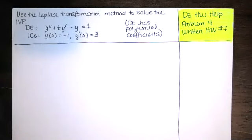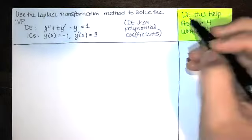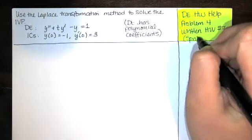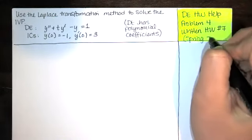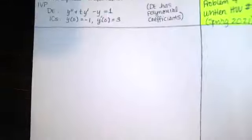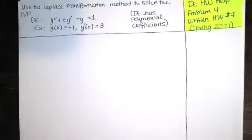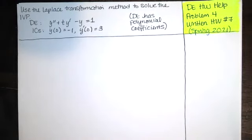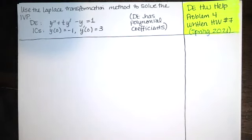In this video we solve problem number four from written homework number seven during the spring 2021 semester in elementary differential equations at Tulsa Community College. We're asked to use the Laplace transformation method to solve the IVP. We have a differential equation and two initial conditions for a second order differential equation.